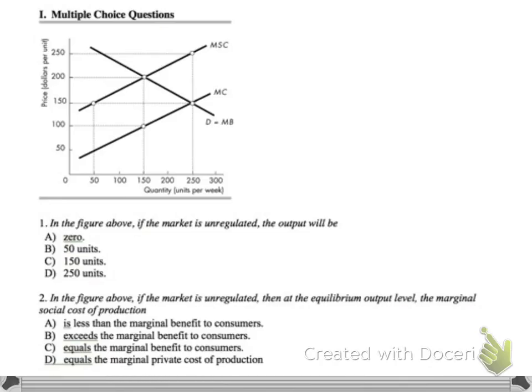So in this figure above, if the market is unregulated, the output will be what? Unregulated means it's left to the private market. So this marginal cost curve right here is for the private market, and this is society's or the regulated. Let's put an R for regulated. So if unregulated, which is the private, what will be the output? Output is the quantity down here. So you just go where marginal benefit equals marginal cost, and that's at this point here. So that's the answer here.